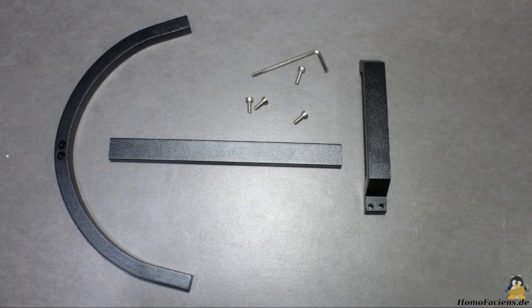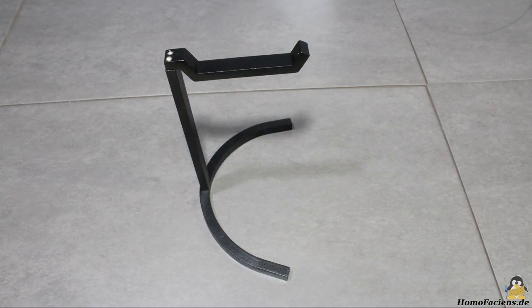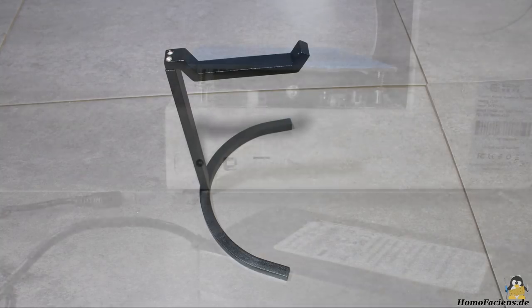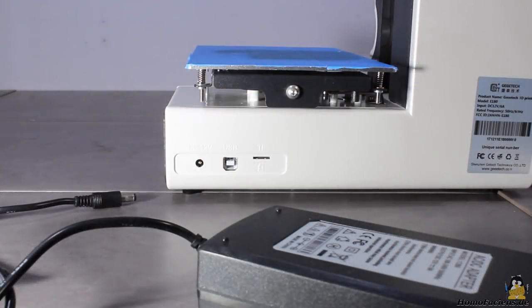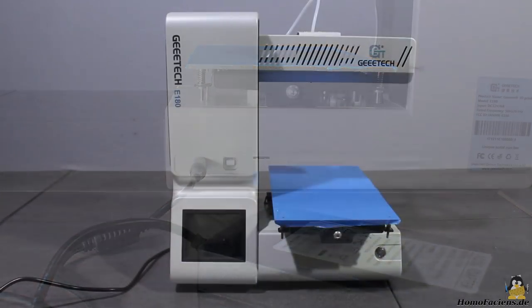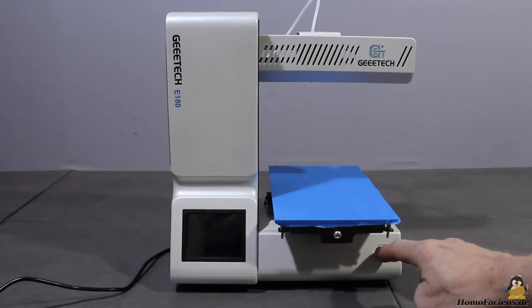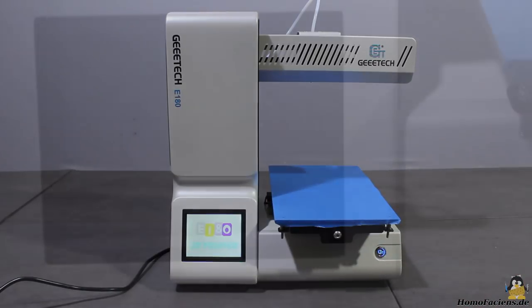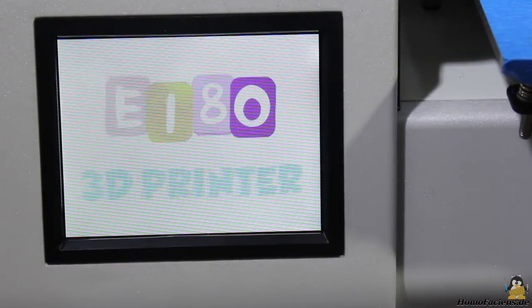If you don't start with disassembling your printer as I did, you only have to assemble the filament holder with 4 screws. After plugging in the power cable and turning the printer on, the main menu appears on the 3.2 inch touch screen.